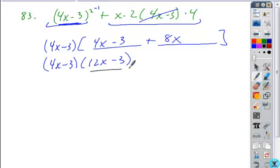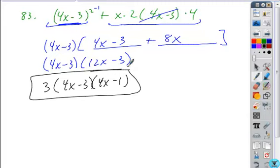And then the last thing is, this is not completely factored yet. I can remove a common factor of 3. When I remove this common factor of 3, I'm left with a 4x on my first term and a minus 1 as my second term. So that would be the simplified form.